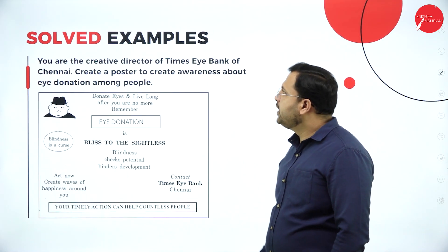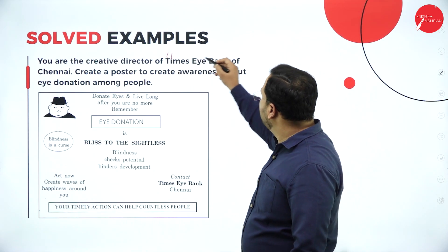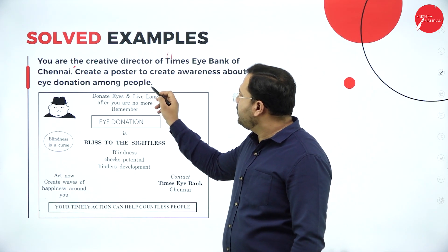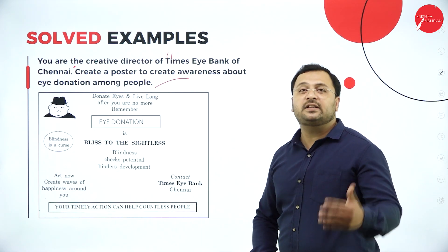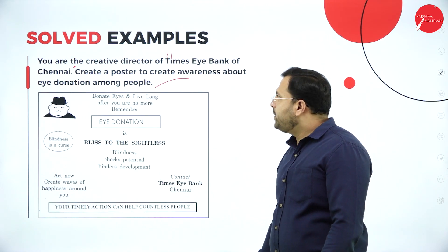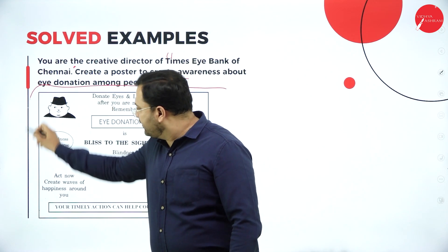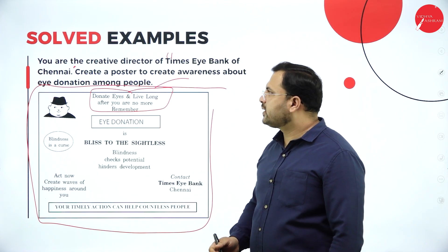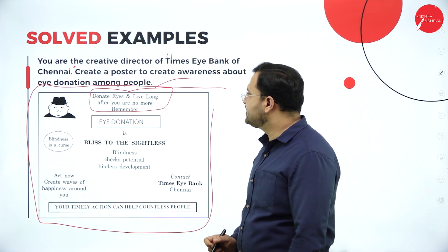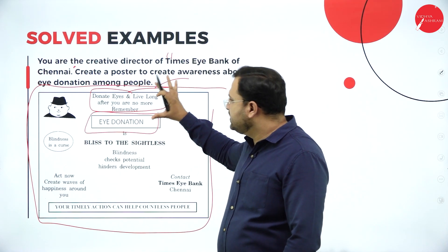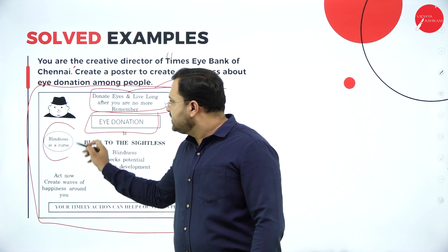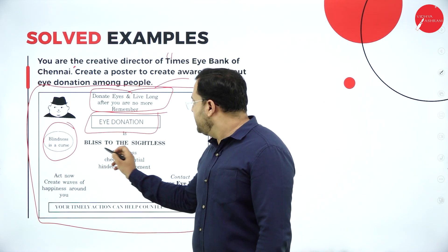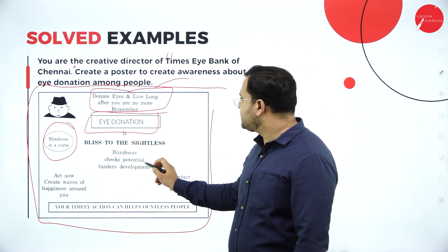Some solved examples. You are the creative director of Times Eye Bank of Chennai. Create a poster to create awareness about eye donation among people — people are recently registering for donating their organs, particularly eye donation. Start with a rectangular box. Use a catchy phrase: 'Donate eyes and live long after you are no more, remembered.' Highlight 'Eye Donation.' Then: 'Blindness is a curse. Be light for somebody's life. Bliss to the sightless. Blindness checks potential.'